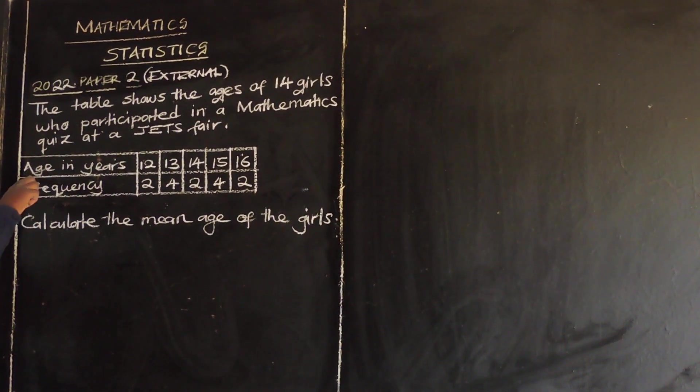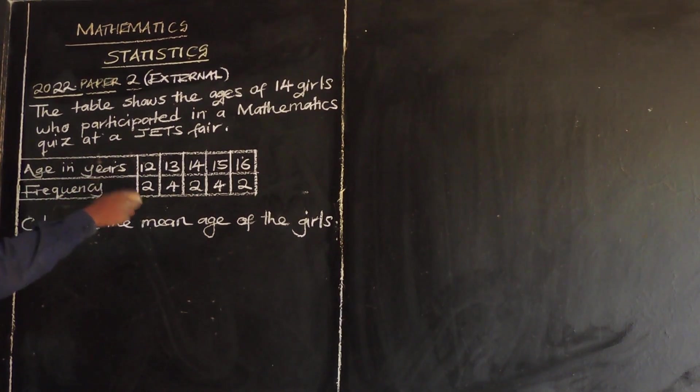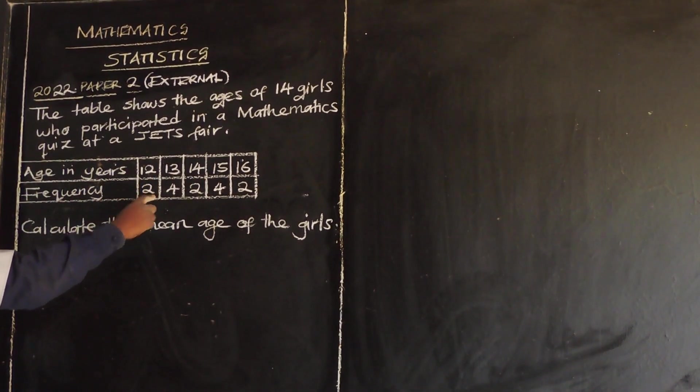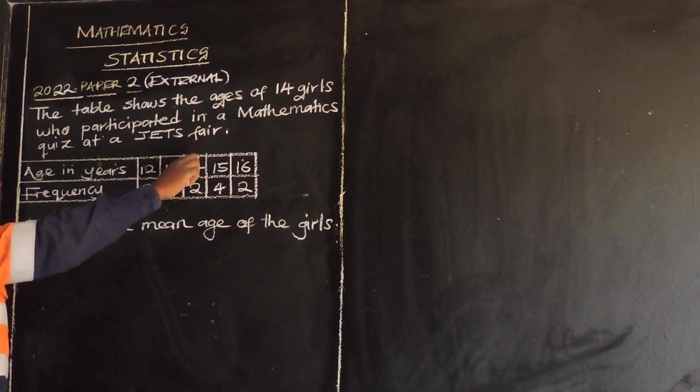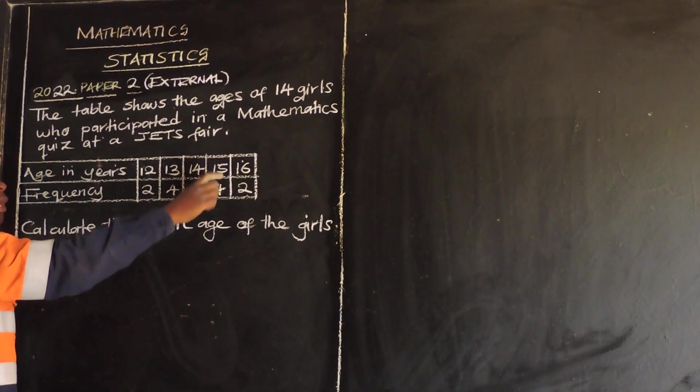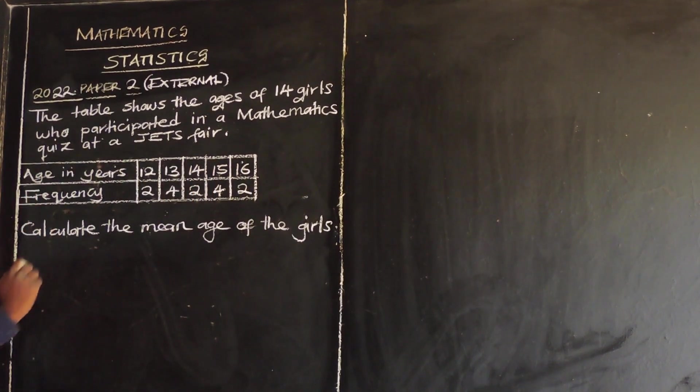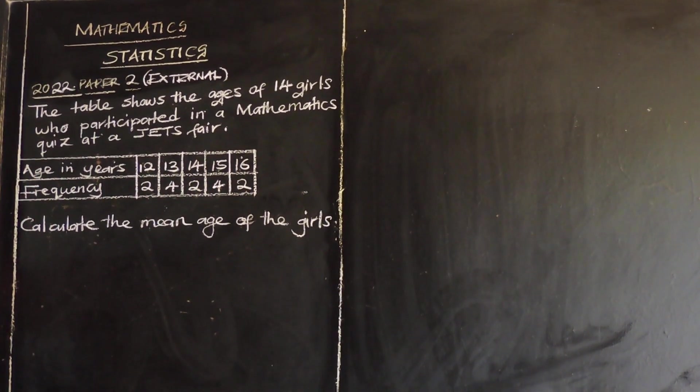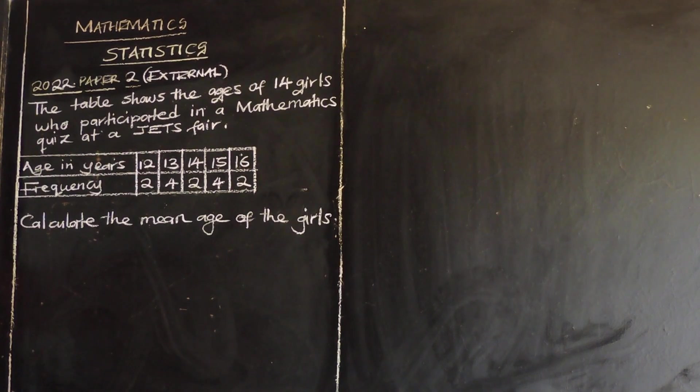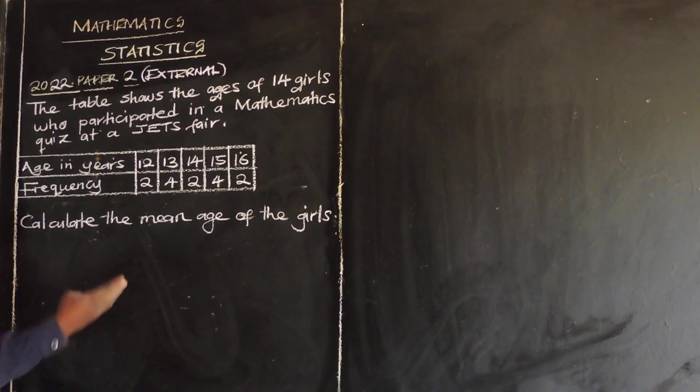Then we have age in years. So those who were 12, they were 2 girls, 13, they were 4 girls, 14, they were 2 girls, 15, they were 4 girls, and 16, they were 2 girls. Then the question is saying, calculate the mean age of the girls. They want us to find the mean age of the girls.